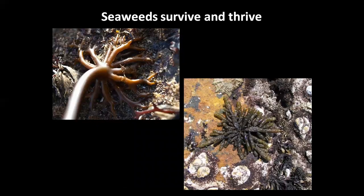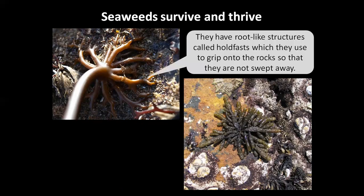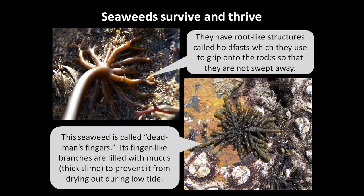Seaweeds survive and thrive. They have root-like structures called holdfasts, which they use to grip onto rocks so that they are not swept away. This seaweed is called dead man's fingers. Its finger-like branches are filled with mucus — thick slime — to prevent it from drying out during low tide.